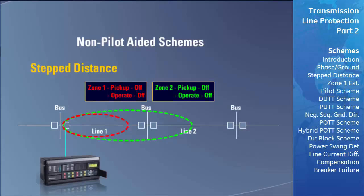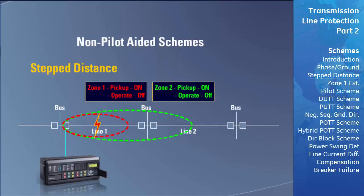Any faults at the beginning of the transmission line will be picked up by both zone 1 and zone 2. Since zone 1 has no intentional time delay, its operate flag turns on immediately. The zone 2 operate flag will not yet turn on because of its programmed time delay. Zone 1's operate flag triggers the relay to trip and clear the fault. At that point, the zone 1 pickup and operate flags turn off, the zone 2 pickup flag turns off, and the zone 2 operate flag remains in the off state, never having turned on.